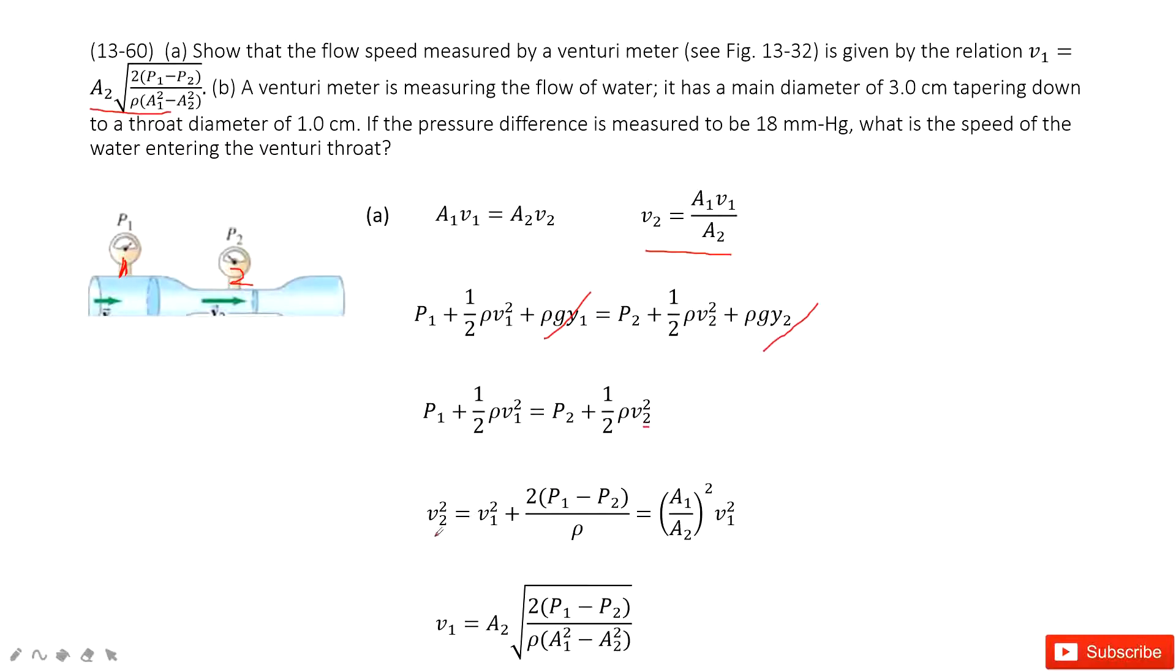Then we can get the function for v2 squared equal to v1 squared plus this term. v1 and v2 squared, we can input this function inside. Now you can see in this equation, we can solve for v1. v1 equal to this function.